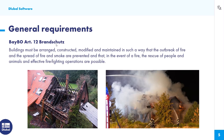The first topic is general requirements. This content comes from the Bavarian building regulations, and I am sure it is similar in your country. The key sentence says: buildings must be arranged, constructed, modified and maintained in such a way that the outbreak of fire and the spread of fire and smoke are prevented, and that in the event of fire, the rescue of people and animals and effective firefighting operations are possible. That is our big aim.